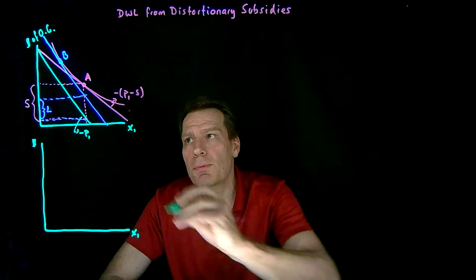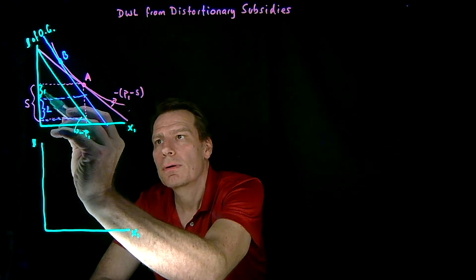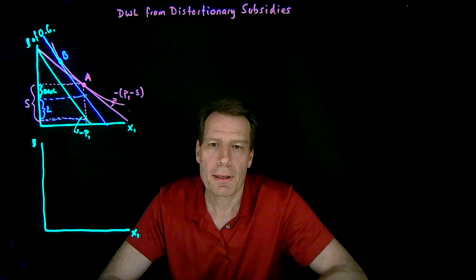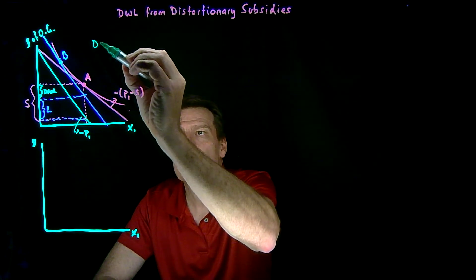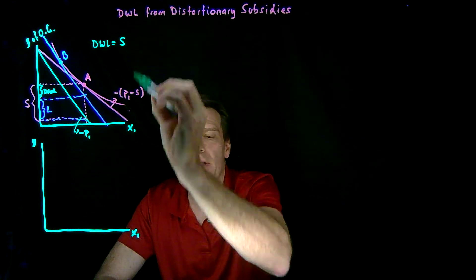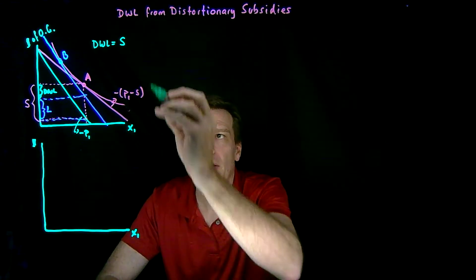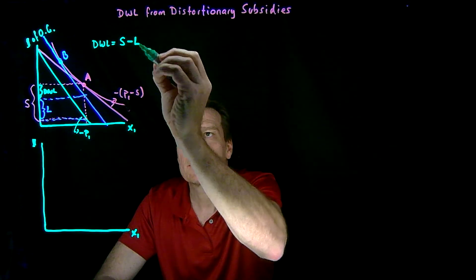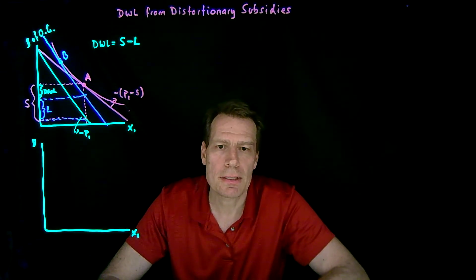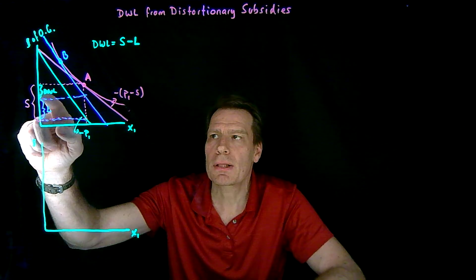The difference between the total subsidy S and the lump sum L is the deadweight loss from the subsidy — the difference between what we actually spent to make the consumer this well-off and what we could have spent if we hadn't distorted prices. And again, you see that deadweight loss emerging from a pure substitution effect.